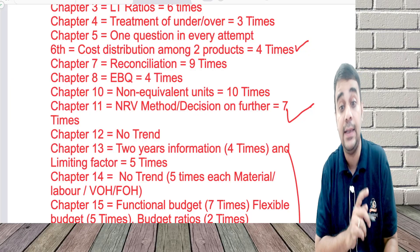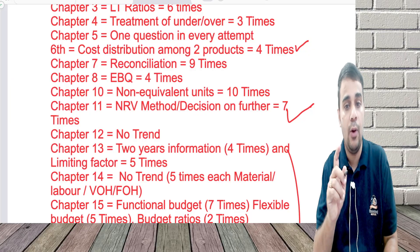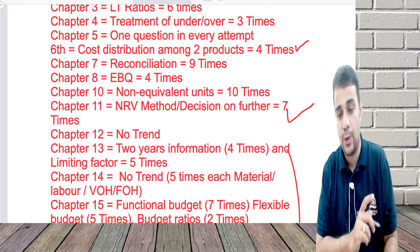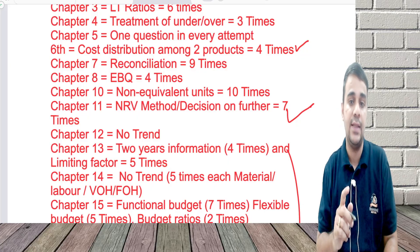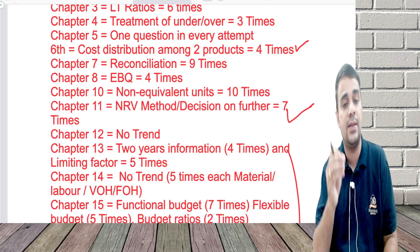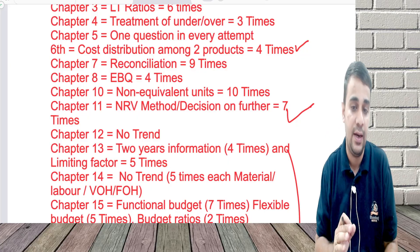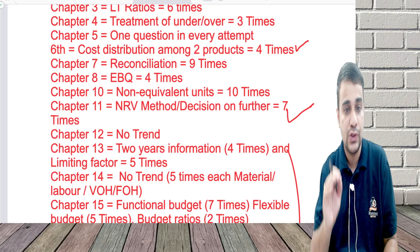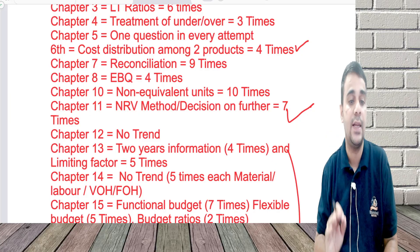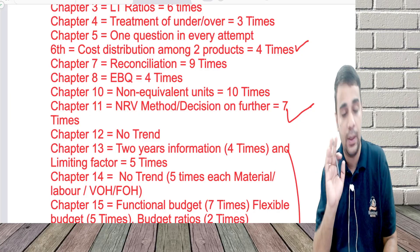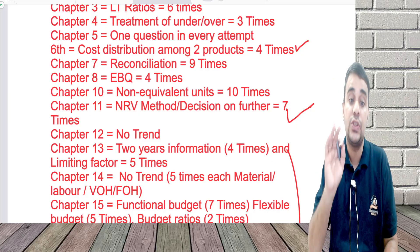Chapter 7 — reconciliation — has been tested nine times, with around 14 to 15 questions overall. Journal entries were asked three to four times as well. For Chapter 7, just focus on doing reconciliation; if you can't do other areas, that's okay.